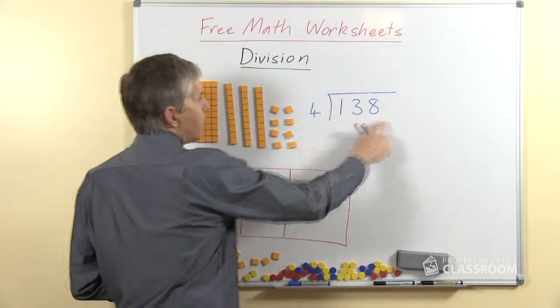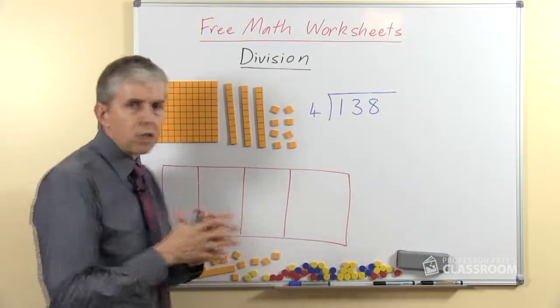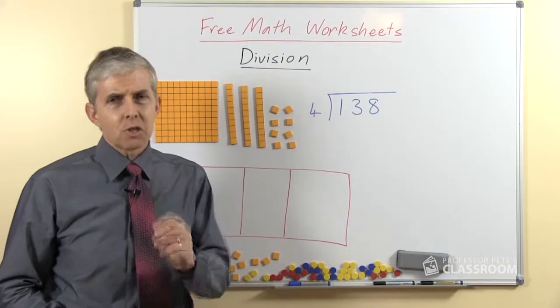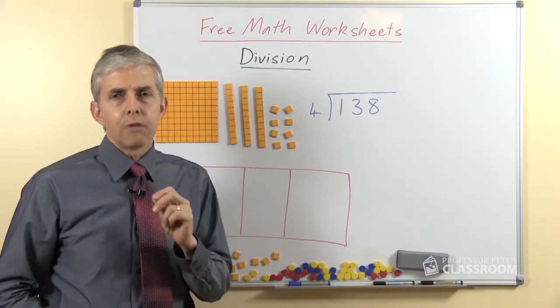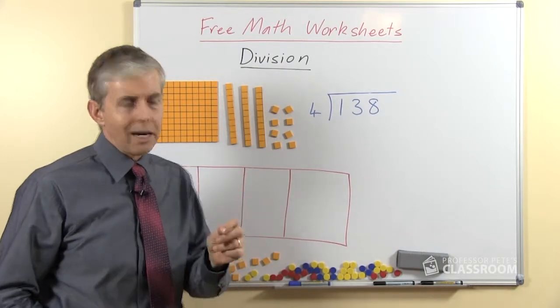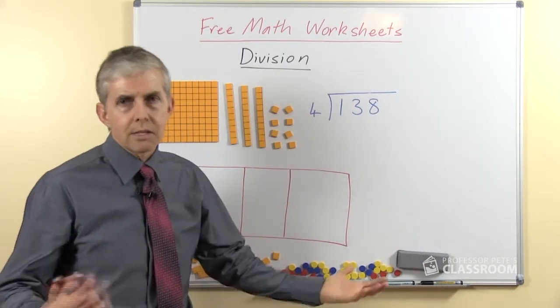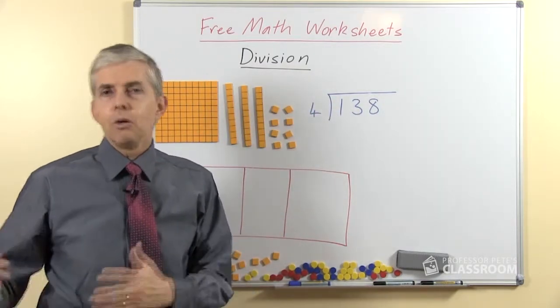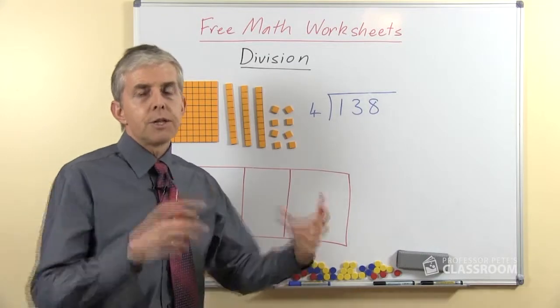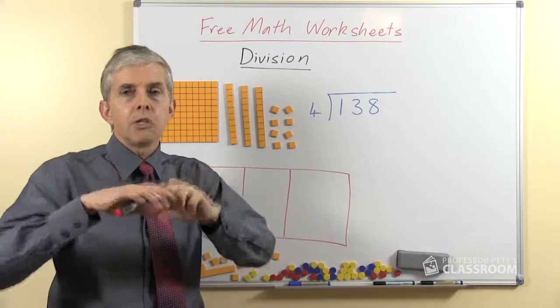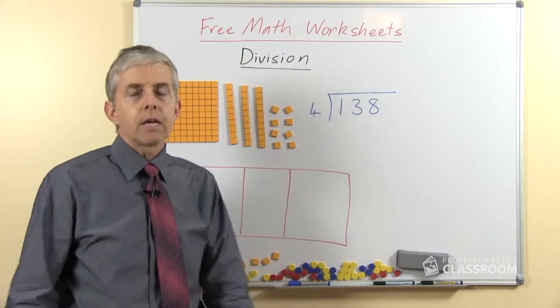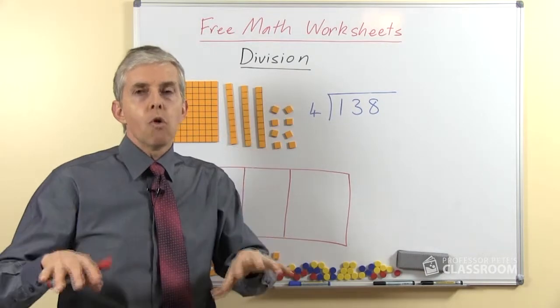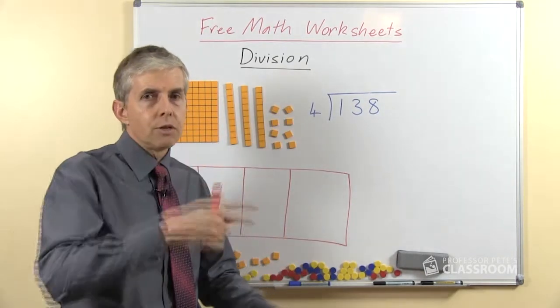So here we go. We're dividing 138 by 4, and the first thing most people will say is, will 4 go into 1? I have to stop right there and say that is unhelpful language. 4 doesn't go into 1, it doesn't go into 13 either. It won't go into 1, so will it go into 13? 4 doesn't go into 13. 13 can be split up 4 ways, it can be shared among 4, it can be divided by 4, it can be divided into 4 groups, but we don't get 4 into 13.